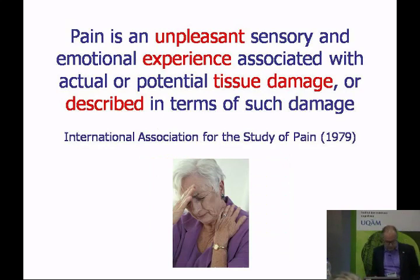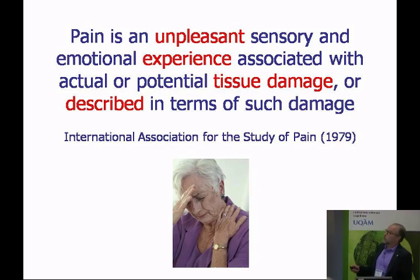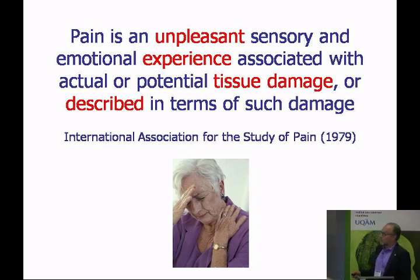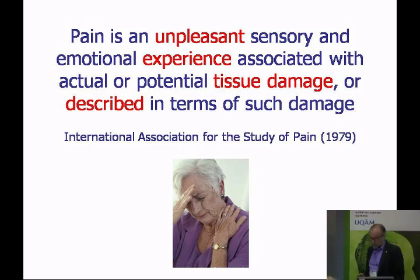The International Association for the Study of Pain, our main professional organization for those of us who study the mechanisms of pain, defined pain in 1979 as an unpleasant sensory and emotional experience — so both sensory and emotional — associated (not caused, but associated) with actual or potential tissue damage, or described in terms of such damage. This definition takes into account clinically relevant pain, the pain of disease, even when the physician can't find anything wrong with the patient. It really covers all the different aspects of pain.